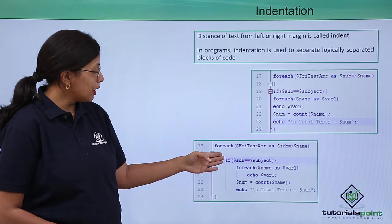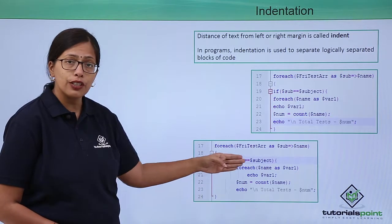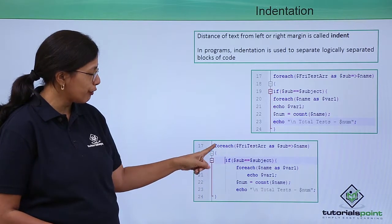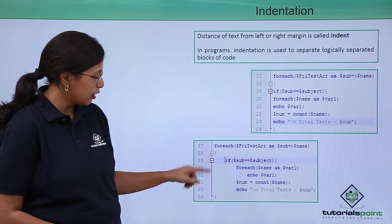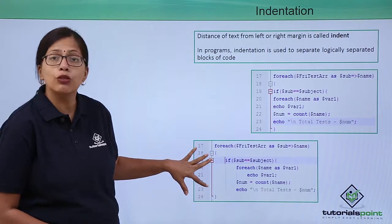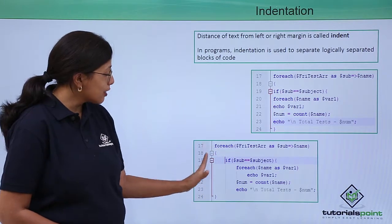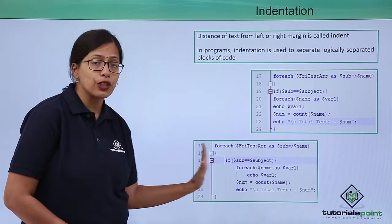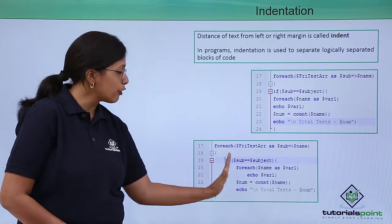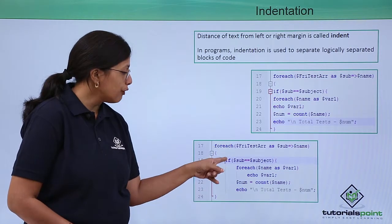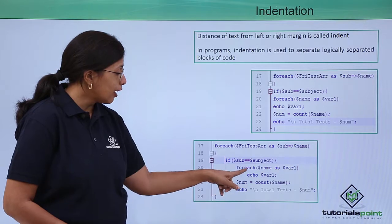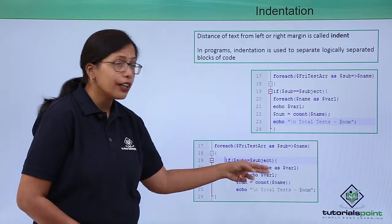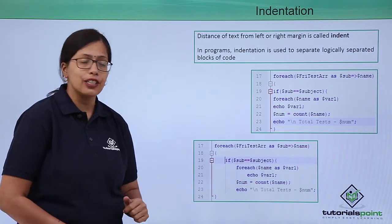Each statement block has been written separately. This control structure 'for' is here, between these two braces. The next set is at a different indentation from the left margin. The 'if' is here, and since it is also a control structure, it has a different indentation.